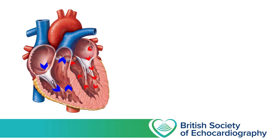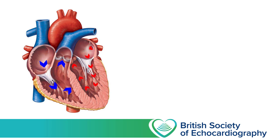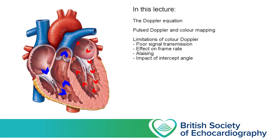Just as it isn't essential to understand the basic physics of ultrasound in order to produce 2D images, it is possible to use colour Doppler without having a full understanding of how these images are generated. However, just as with 2D imaging, there are some important limitations of using colour Doppler, and we can only really understand these limitations if we understand how the images were produced in the first place. So over the course of this lecture I'm going to explain how we generate colour maps and some of the problems we might encounter when using them.